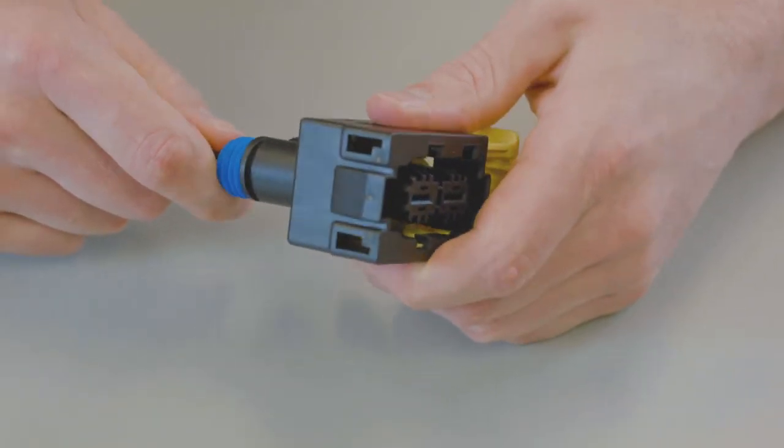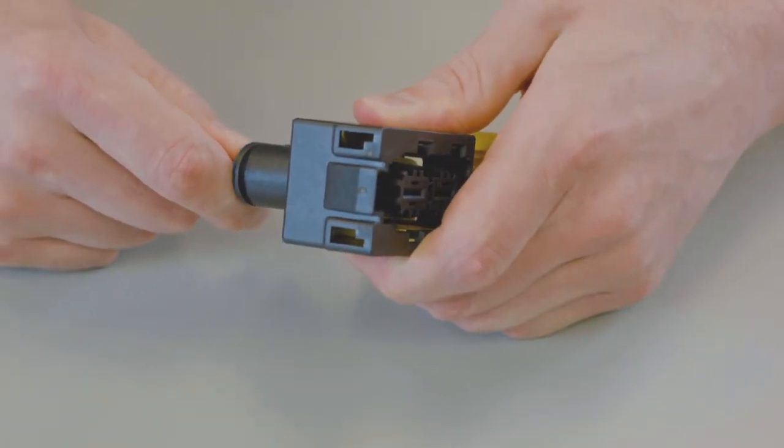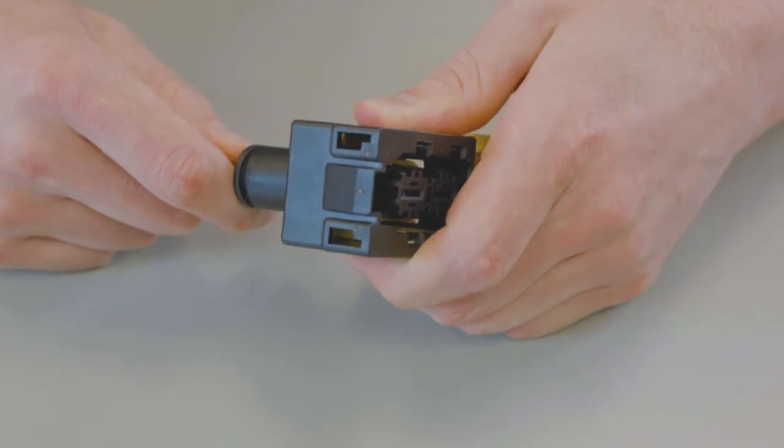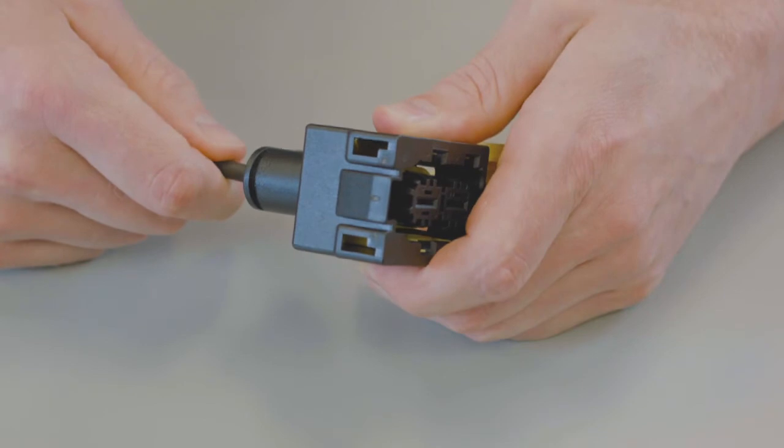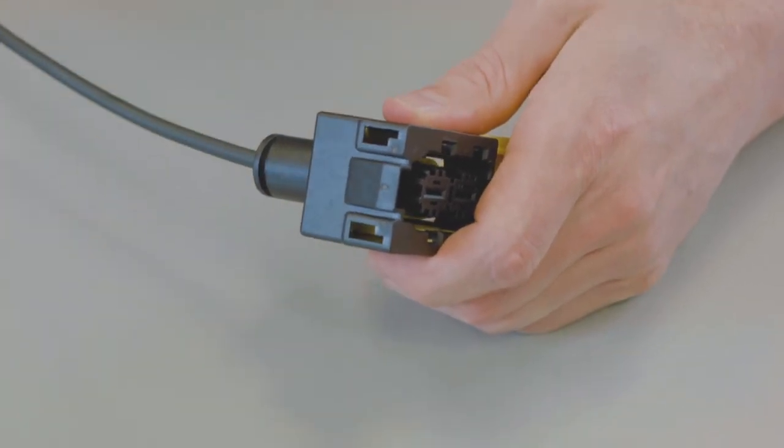Push the contact straight into the rear of the connector until you hear and feel a click. A slight tug will verify the contact is locked in place. Repeat this process until all of the cavities are filled.